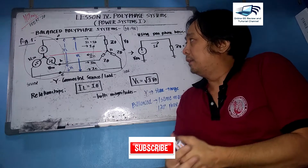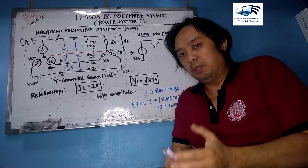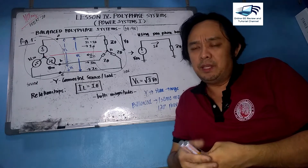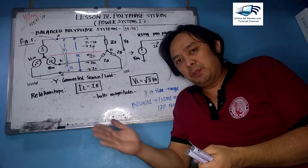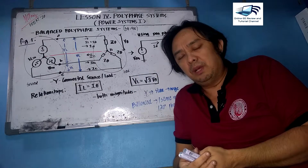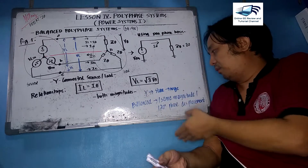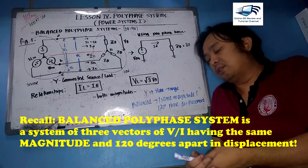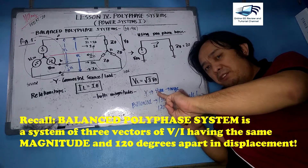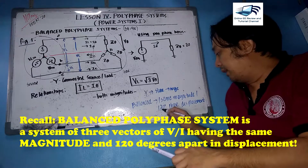Today we will discuss the basic fundamentals of the balanced polyphase system and describe the different types of connection under it. To recap what we have discussed so far: first, power factor correction, then phase sequences, and from phase sequences we describe what a balanced polyphase system is. A balanced polyphase system has three phase vectors of the same magnitude, differing 120 degrees apart.